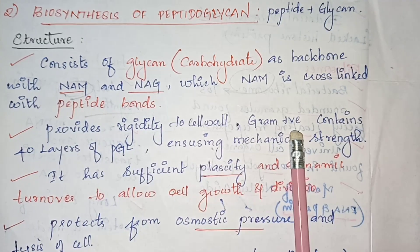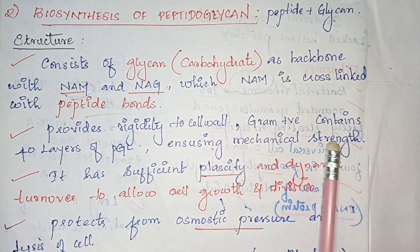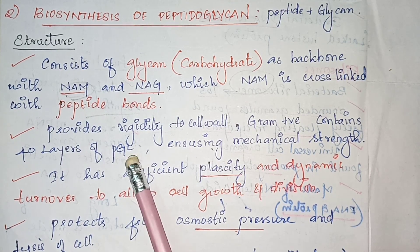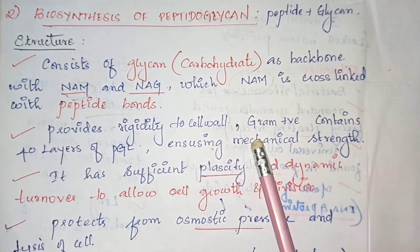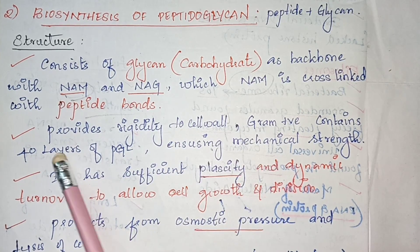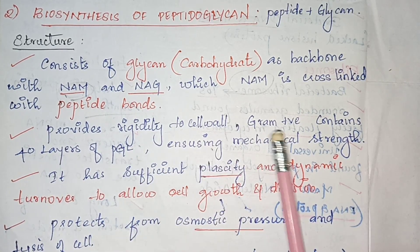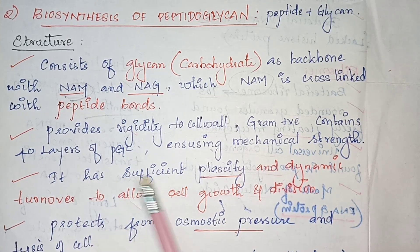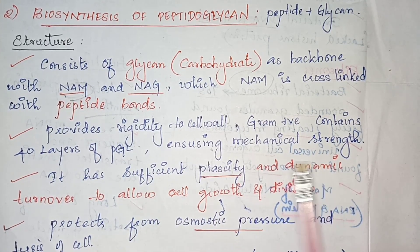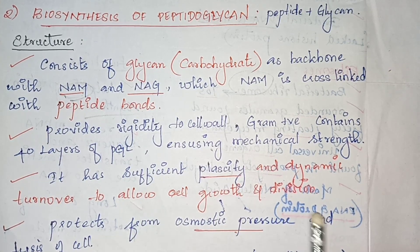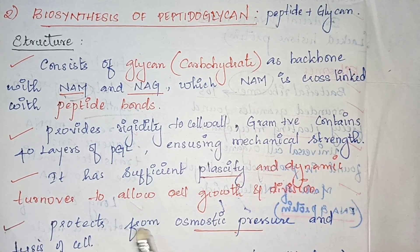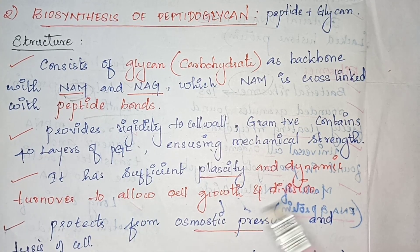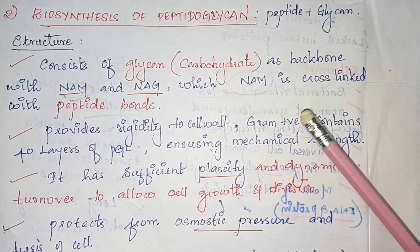Peptidoglycan is mainly present in gram-positive bacteria, where it contains 40 layers. By having 40 layers, it ensures the mechanical strength of the entire cell. It also provides sufficient plasticity to the cell, allows cell growth and cell division, and protects from osmotic pressure and cell lysis.